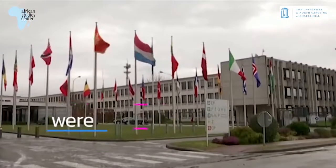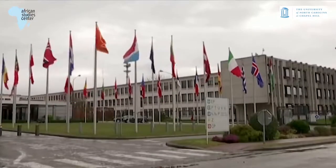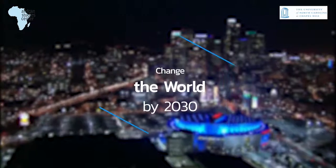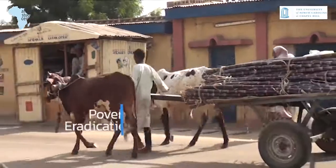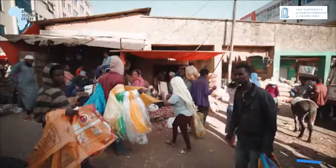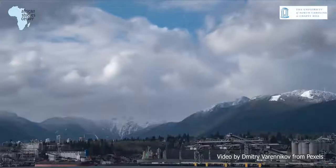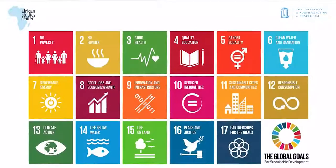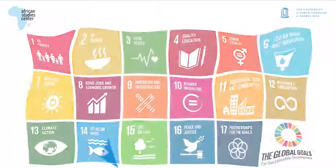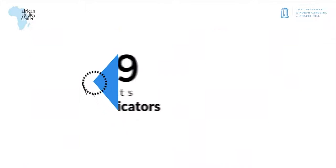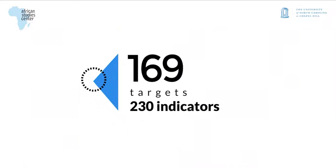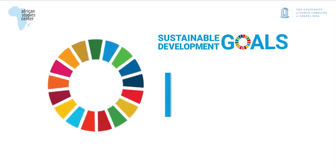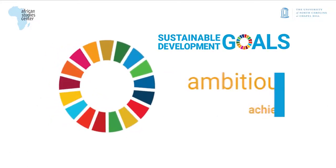These goals were carefully identified as having the potential to change the world by 2030 through poverty eradication, fighting inequality, and addressing the urgency of climate change. The 17 goals constitute 169 targets and 230 indicators. The global goals are ambitious but achievable.